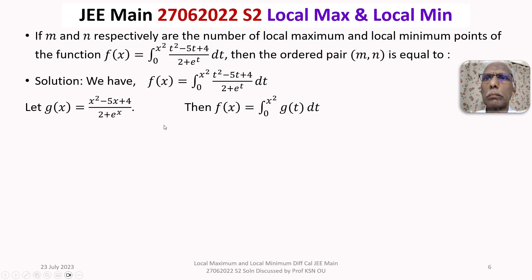To discuss local maximum and local minimum points we need to differentiate f(x), that is, find the first derivative f'(x). Since the limits of the integral are functions of x — the upper limit is x² and the lower limit is 0 — we use Newton-Leibniz formula rather than treating them as constants.